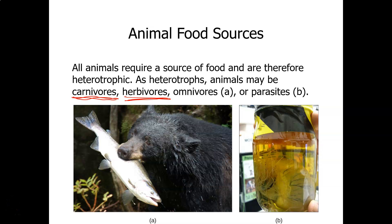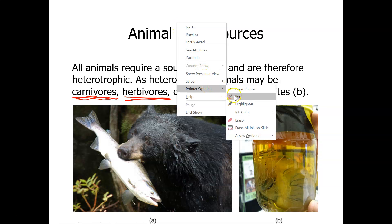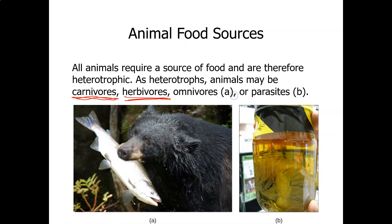This is part two of the animal diversity lectures. We left off discussing that animals are heterotrophs, which means they consume their food. They are not able to make their own food as autotrophs are, like plants.